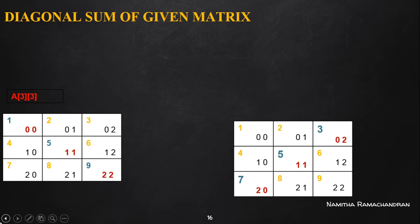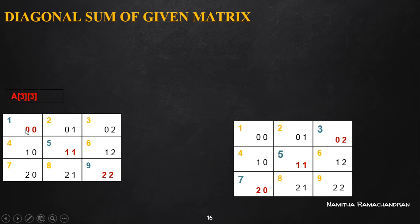We have two types of diagonals: one is the forward diagonal and the other is the backward diagonal. We have to find the diagonal sum both for the forward diagonal and for the backward diagonal. First, we will consider finding the sum of elements present in the forward diagonal.